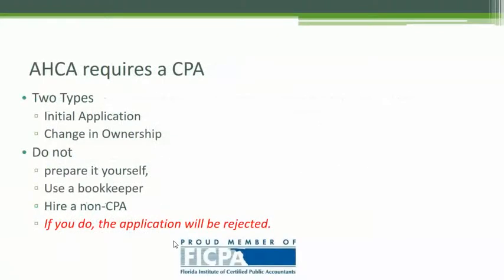All of this has to be submitted to ACA. Now, ACA requires two types of applications. There's the initial application, which is the most common and prevalent type — that's basically when you're starting a health care facility. And then there's a change in ownership, which is for when you're buying the stock, the assets, or the license of an existing facility. You're not starting from scratch, so you have to file a different type of form, and the transaction is more complicated because you're probably having a financial transaction with the seller of the health care facility.